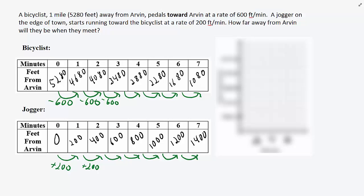The tables show us some interesting information. We see that after 6 hours, the bicyclist is still further away from Arvin than the jogger. But after 7 hours, the jogger is further away from Arvin than the bicyclist. That means somewhere between 6 and 7 hours, the jogger and the bicyclist meet.